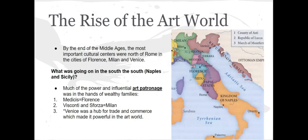The rise of the art world comes in Italy. You have looked at Italy when we were studying ancient Rome, and we know that Italy kind of looks like a boot. By the end of the Middle Ages, the most important cultural cities were north of Rome: Florence, Milan, and Venice. Much of the power and influential art patronage was in the hands of wealthy families — the Medicis were in Florence, the Visconti and Sforza were in Milan, and Venice was a hub for trade and commerce, which made it powerful in the art world.